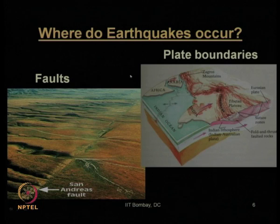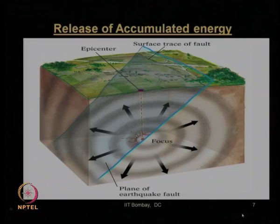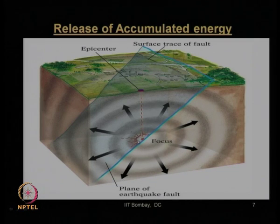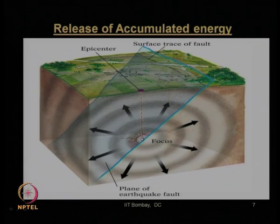We have seen the pictorial view of two major reasons of earthquake and where these earthquakes occur. One can be due to the plate boundaries between two plates — those are possible locations of tectonic plate movement type earthquakes — or another can be the fault rupture earthquake. We discussed the release of accumulated energy at the point below the ground surface, called the focus or hypocenter of earthquake, from which seismic waves travel in all directions. The earthquake epicenter is the vertical projection of that focus point on the ground surface.